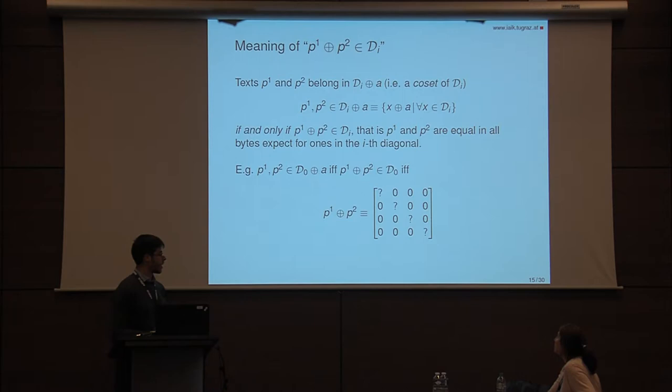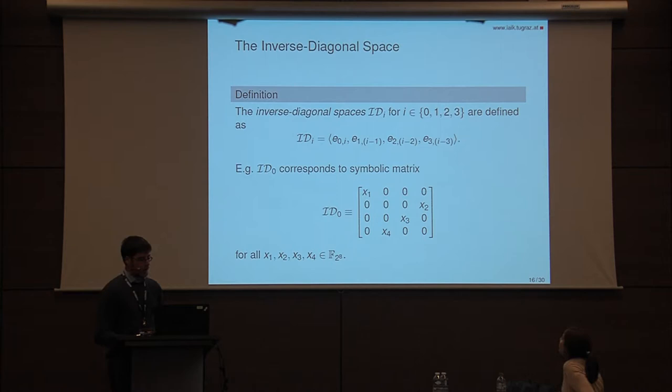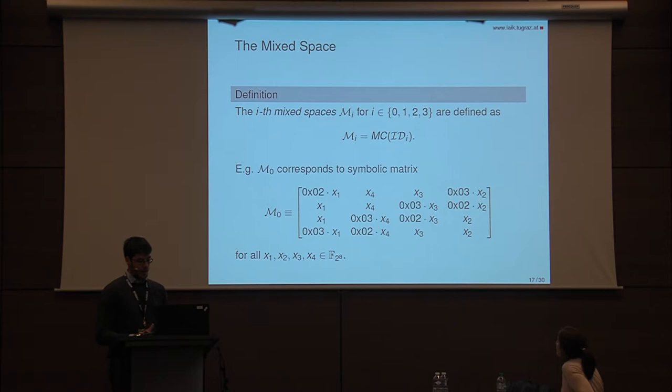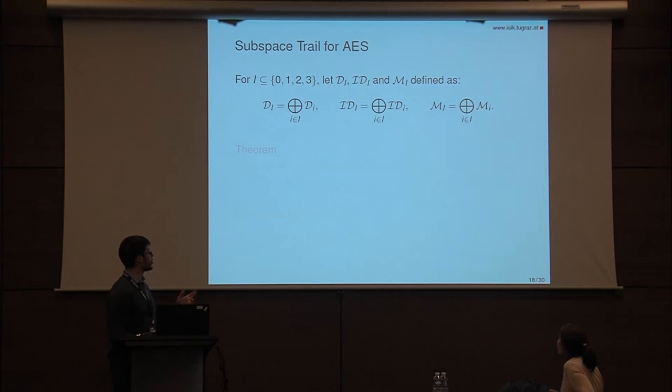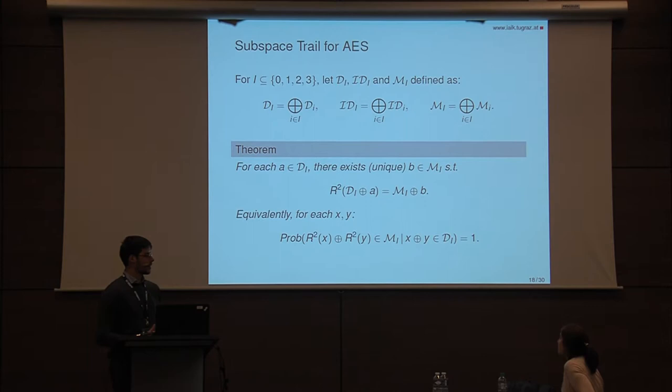The inverse diagonal space is defined as a linear combination of four corresponding matrices. For ID_0, all bytes are equal to zero except for the ones in the first anti-diagonal. The mixed space is defined as the MixColumns operation applied to the inverse diagonal space. All these subspaces have dimension four, but we can also define subspaces of higher dimension using a simple formula. What is important to remember is that each coset of a diagonal space is mapped into a coset of a mixed space after two rounds — equivalently, if we start with two texts in the same coset of a diagonal space, they belong to the same coset of a mixed space after two rounds with probability one.